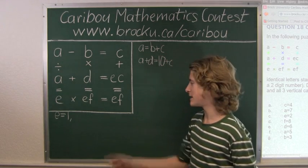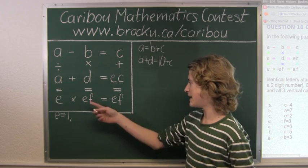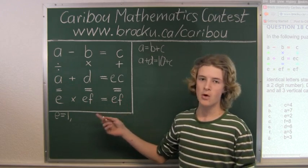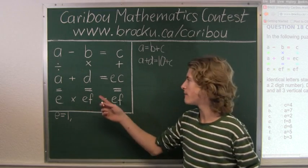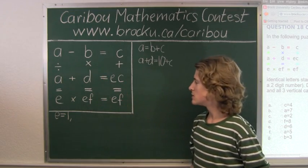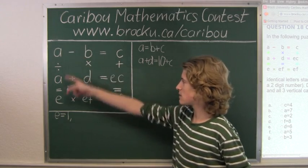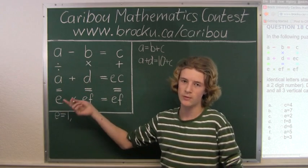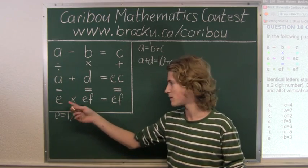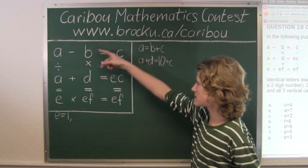Now let's look at the next row. E times EF equals EF. Well, we already know E is 1, so this does not give us any information to help solve other equations. So now let's look at the first column. A divided by A equals E, which we already have down because we know E equals 1. So now let's look at the next column.